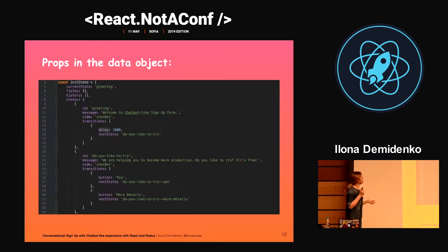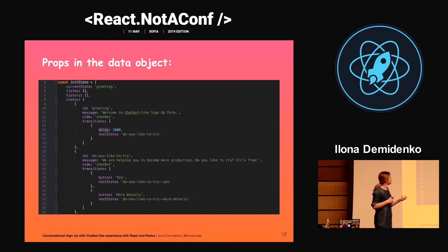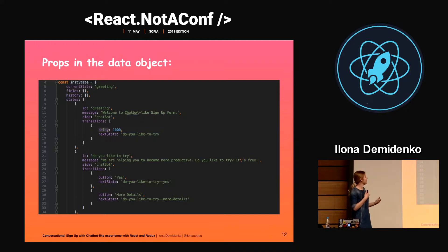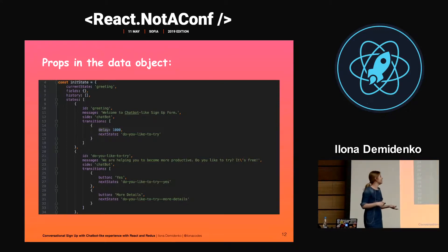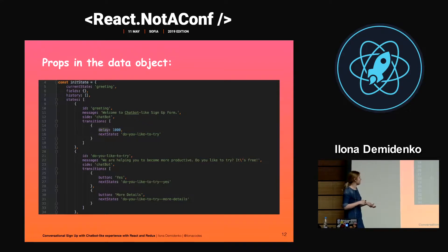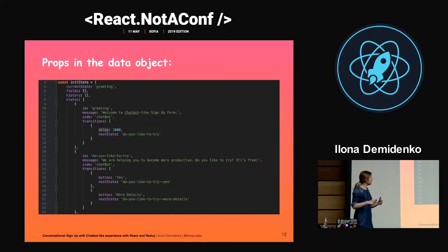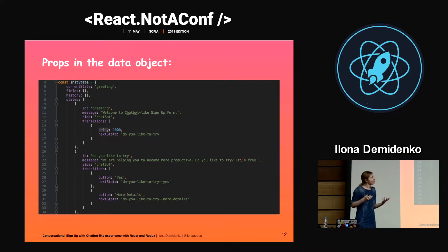Let's look closer at the data objects. The current state field holds the current state the application is in. Fields collects all user responses during the conversation. History is an array of all messages during the conversation with the chatbot and the user. States is an array of states — each state has an ID, the identifier of the state message, and the payload data for that state. Transitions are the next possible moves from the current state to the next state, and each transition has triggers such as delay or button — a specific user interaction that will trigger the transition and change to the next state.